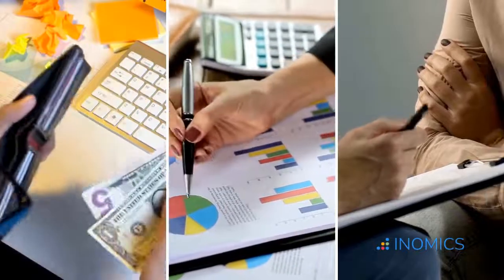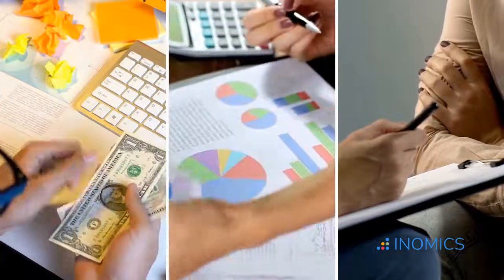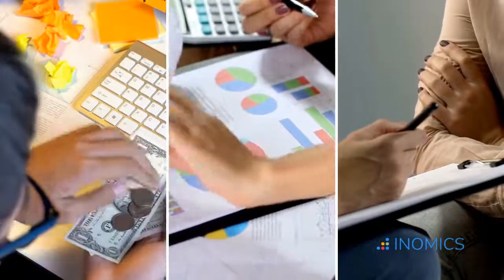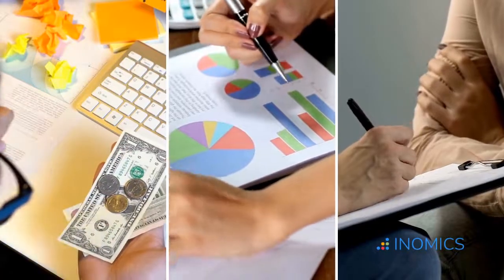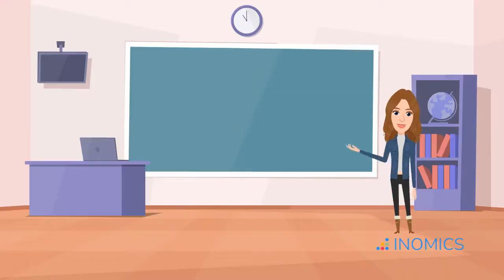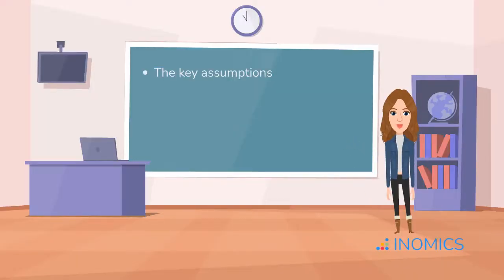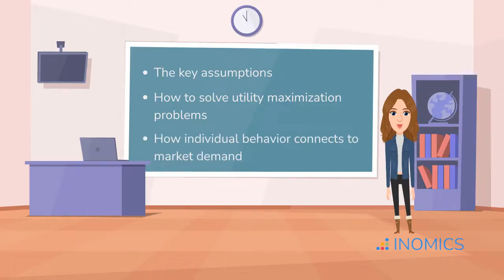So there you have it — consumer theory in a nutshell. From utility maximization under constraints to market demand curves and extensions with behavioral economics, consumer theory is essential to understanding how microeconomic models work. If you're studying for exams, focus on the key assumptions, how to solve utility maximization problems, and how individual behavior connects to market demand.